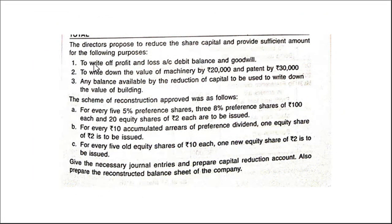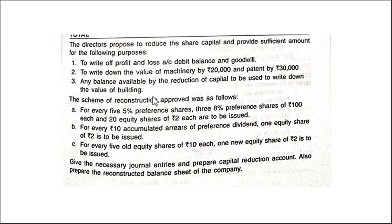What are the things we are supposed to do? First, write off the profit and loss account debit balance. Second, write off goodwill. Third, reduce the value of machinery and patents. If any balance remains after that, it should be used to write down the value of the building — as much as is possible. This is the first and most important step before we conduct the reconstruction.